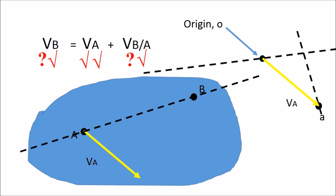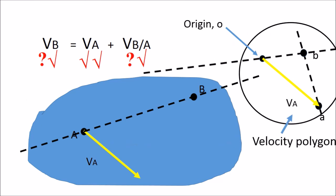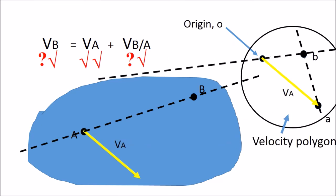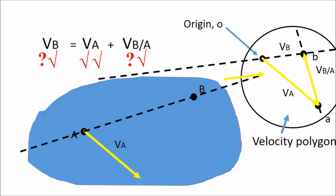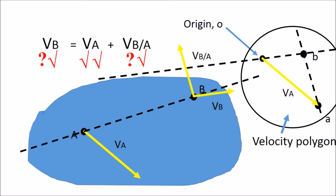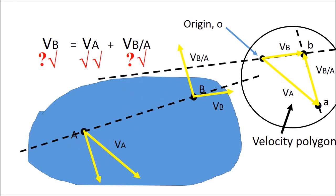There is an intersection, which is point B. We are now completing our velocity polygon: the velocity of B equals the velocity of A plus the velocity of B with respect to A. We can transfer this velocity vector to point B, and also transfer the relative velocity vector of B with respect to A to point B. In the same way, we can have the velocity vector at point A — this is the velocity of A with respect to B. Both of these are perpendicular to the line that joins A and B.